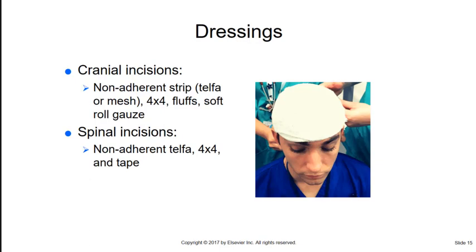For dressings: cranial incisions use a non-adherent strip such as Telfa or mesh directly on the wound, four-by-fours above that, then four-by-fours turned into fluffs, followed by a soft roll gauze wrapped around to keep it in place. Spinal incisions are simpler — a non-adherent Telfa, four-by-four, and tape.